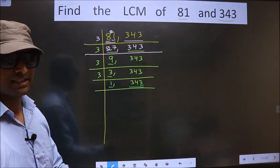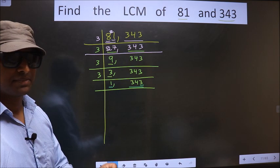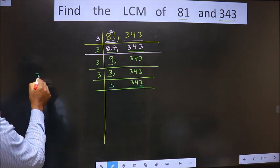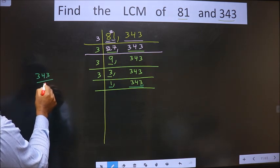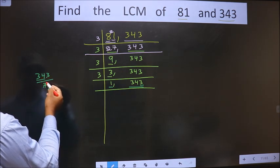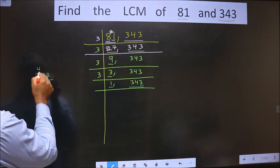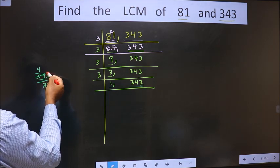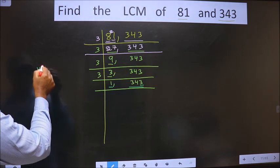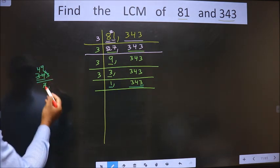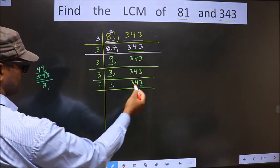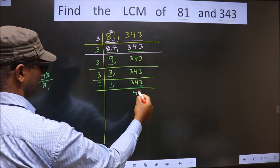The next prime number is 7. Let us check divisibility by 7. That is 343 divided by 7. Here we have 34. A number close to 34 in the 7 times table is 7 fours 28. 34 minus 28 is 6, carried forward making it 63. 7 nines 63. Yes, this number is divisible by 7. So we take 7 here. This goes 49 times.